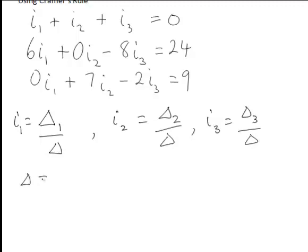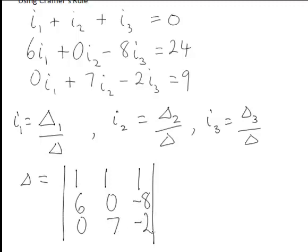Working out delta, that is the coefficients of the unknowns and the determinant of the matrix of those coefficients. First row 1, 1, 1, second row 6, 0, negative 8, third row 0, 7, negative 2. This matrix determinant works out to be 110.